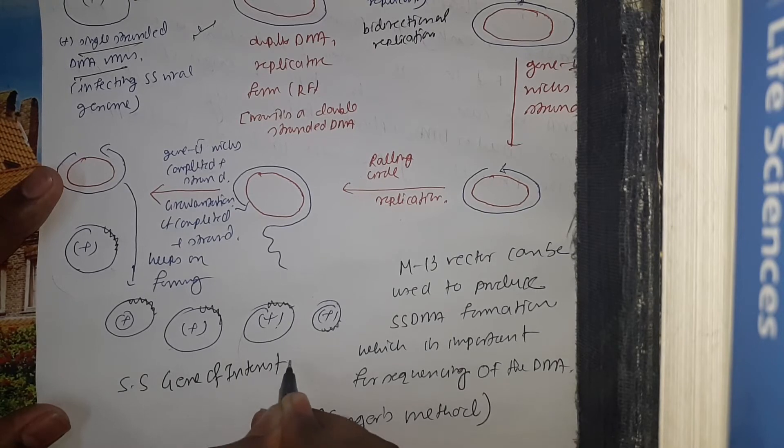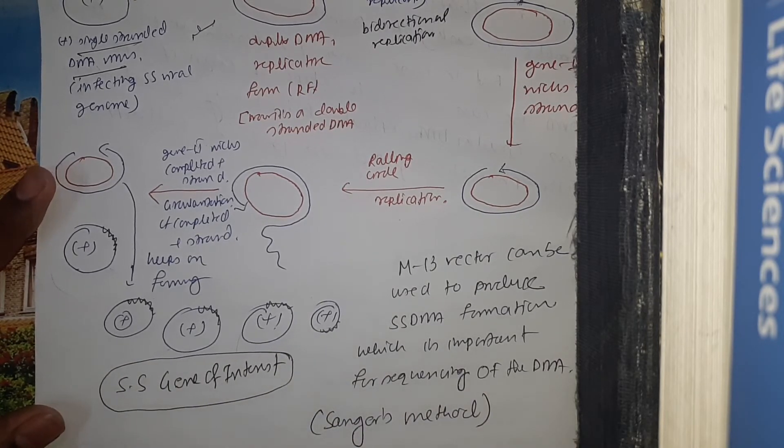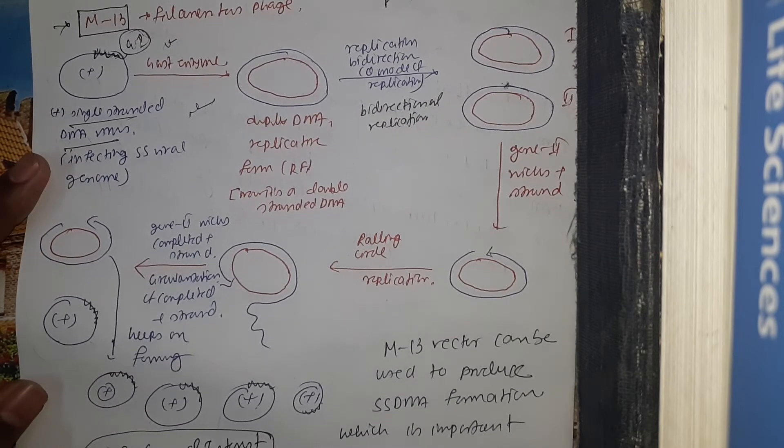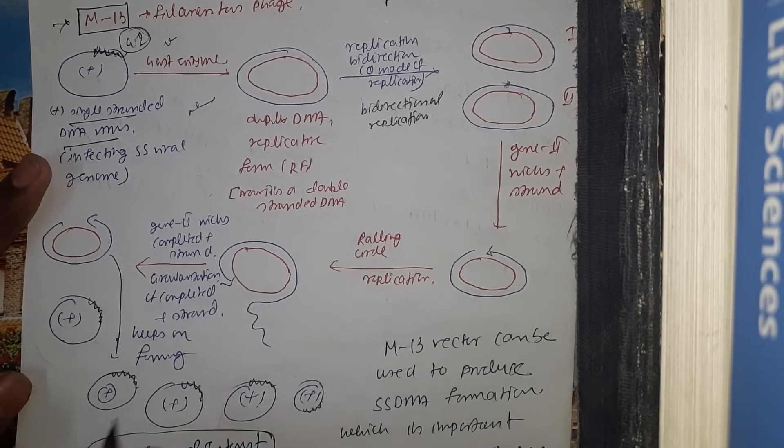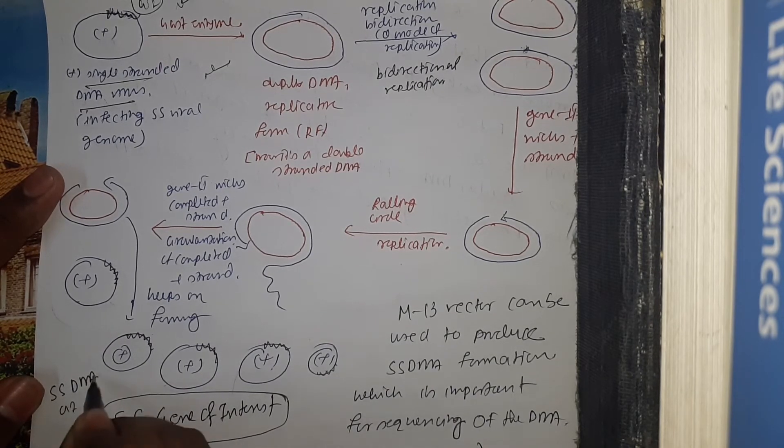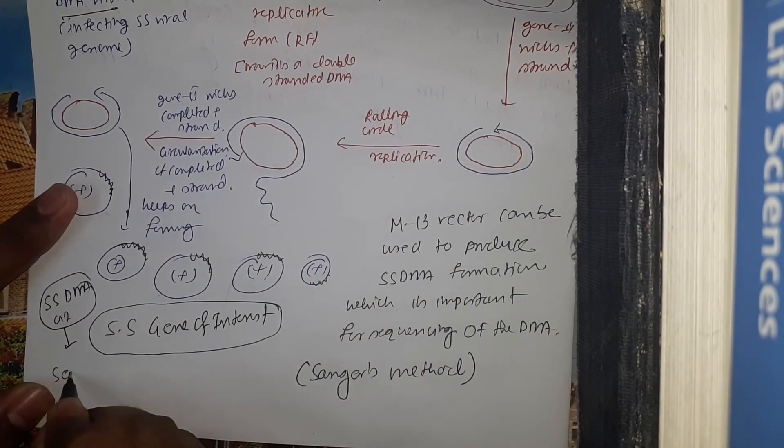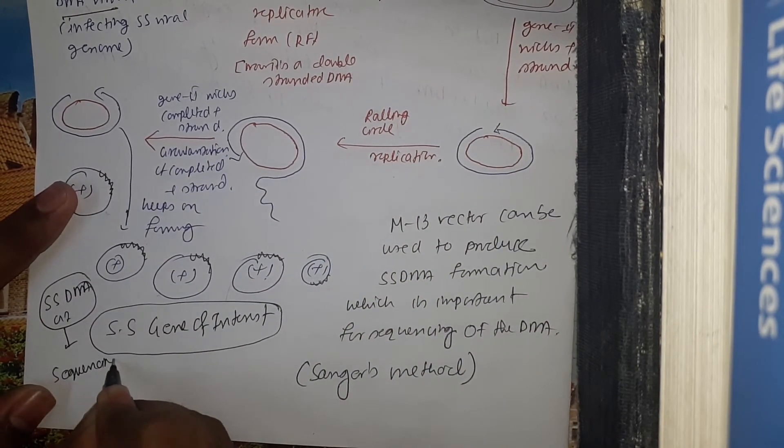That is the actual goal of using M13 filamentous phage as a vector, because M13 filamentous phage helps us to produce single-stranded gene of interest, and that is important for sequencing such as Sanger method.